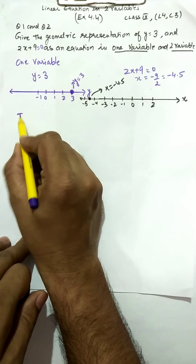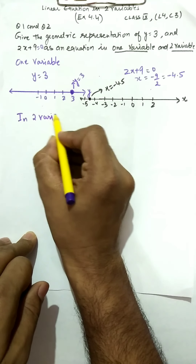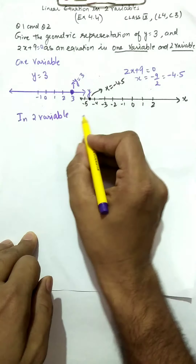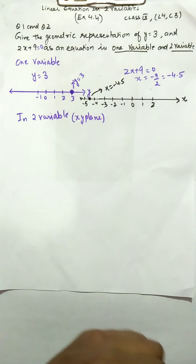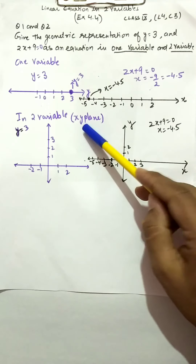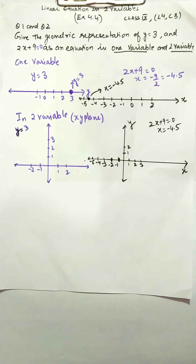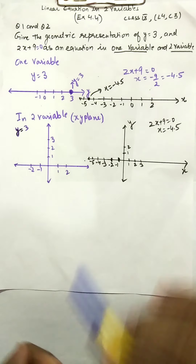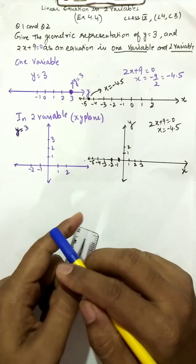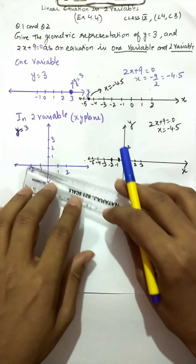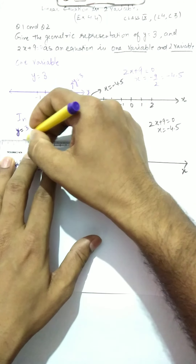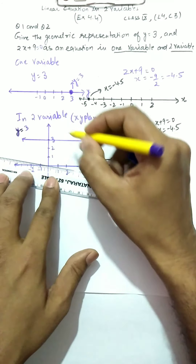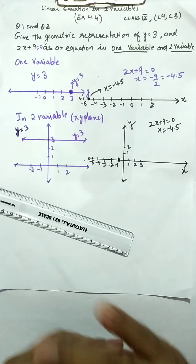Now we will discuss representation in two variables. Whenever we say two variables, we are talking about the x-y plane, also called the coordinate plane or Cartesian plane. So whenever we talk about two variables it is always the x-y plane. The first equation is y = 3. You draw the line y = 3, and this is your required line in the x-y plane.